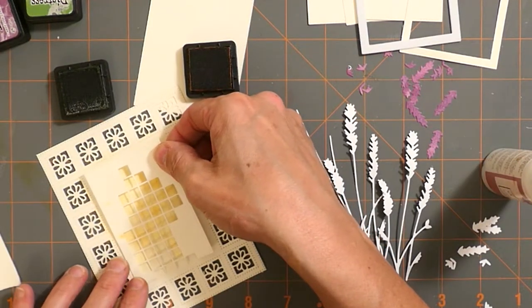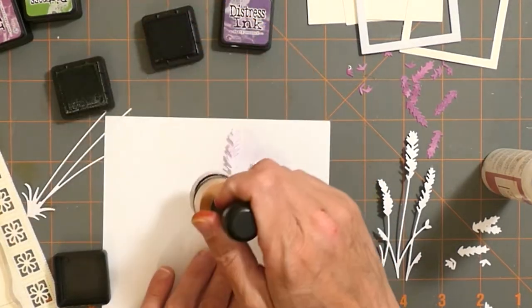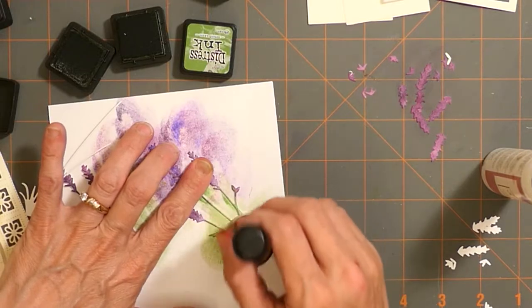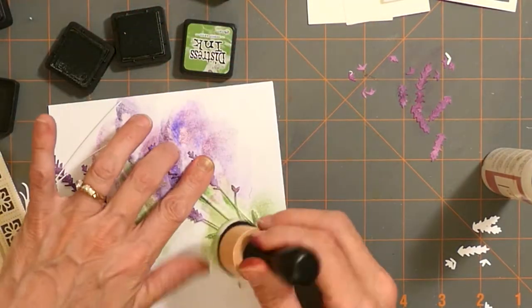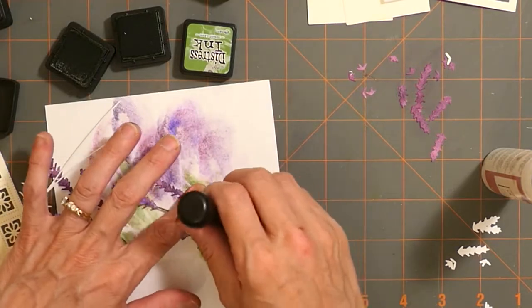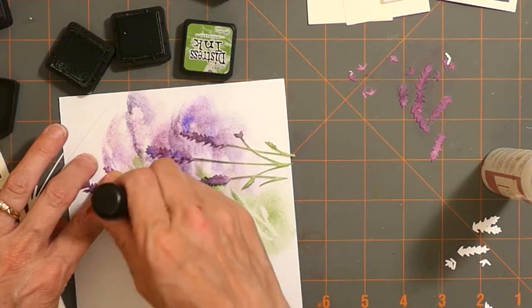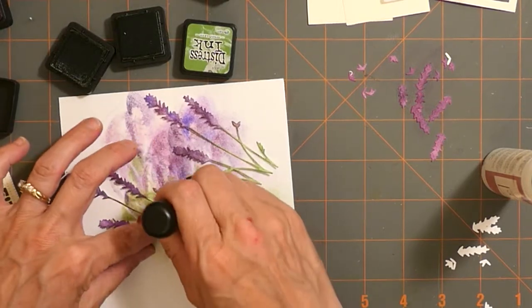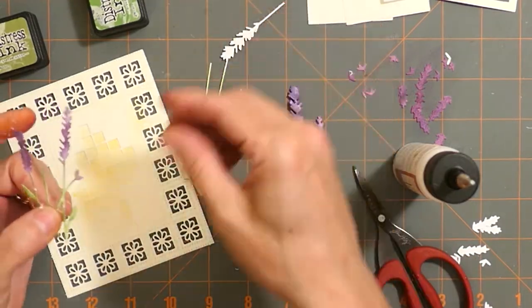There was no rhyme or reason to how I colored the lavender. I just took out probably three different colors of the purple distress ink and a couple of colors of the green, and I just kind of started dabbing the color on.